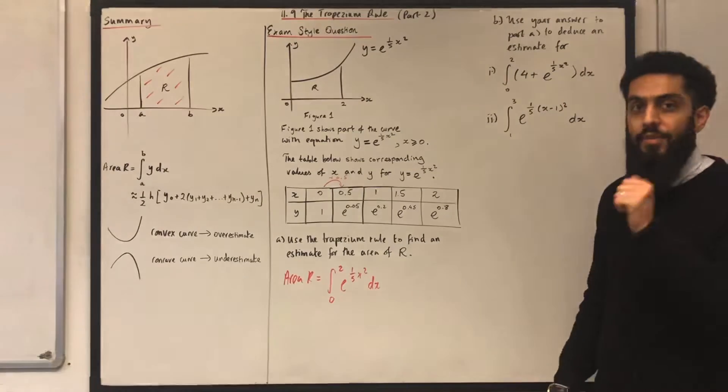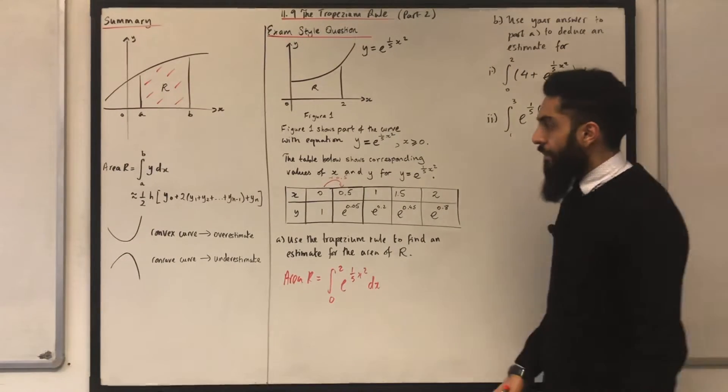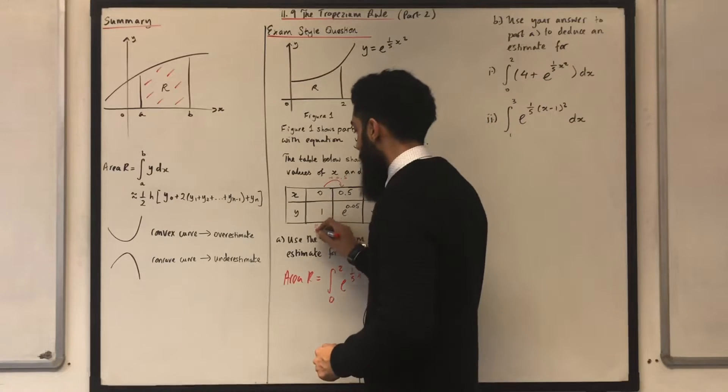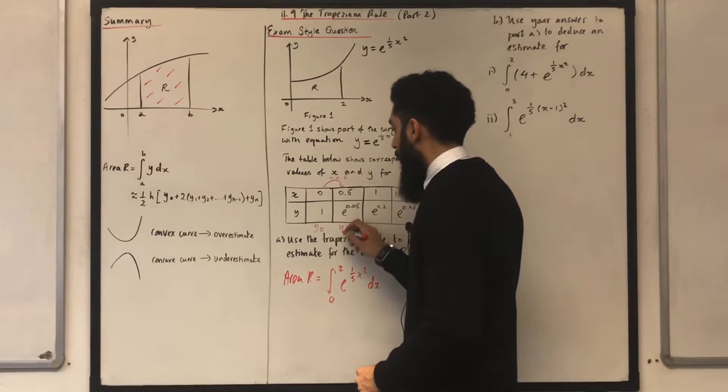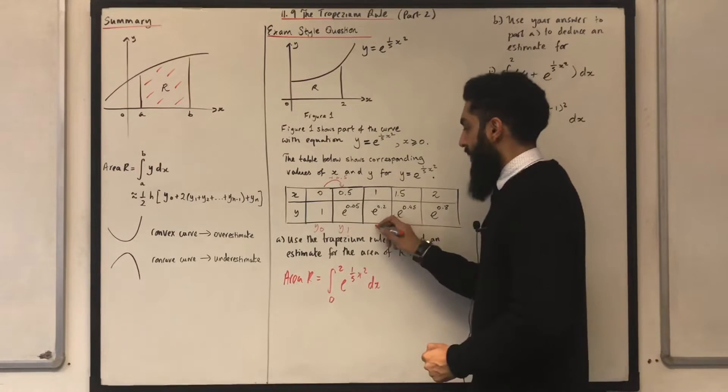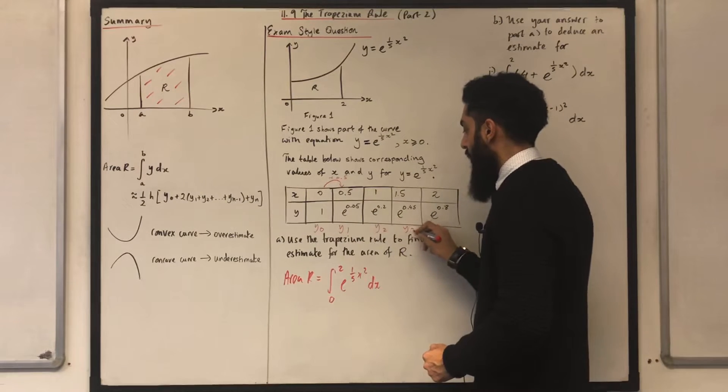Over here, the 1 represents y0, the e to the power 0.05 represents y1, and so on. So I've got y2, y3, y4.